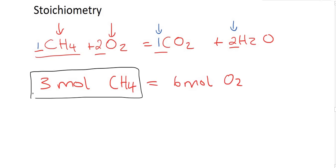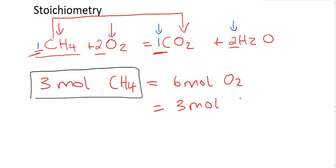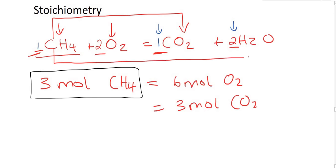If we have three moles of CH4, then if we look at the ratio between CH4 and CO2 they are in a one to one ratio, so that means you would have three moles of CO2. And then if we look at CH4 and H2O, they are in a one to two ratio, so you'd have six moles of H2O. Everything in chemistry is about moles.